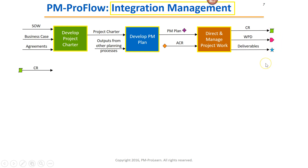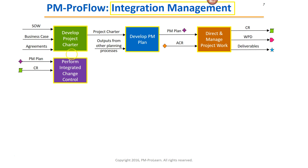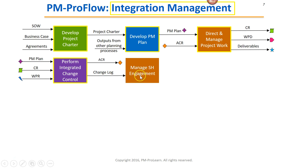Change Requests is an input to a process called Perform Integrated Change Control. It's purple because we're now in monitoring and controlling, and it's highlighted because it's still an integration management process. Perform Integrated Change Control needs the project management plan and Work Performance Reports as inputs. The output is Approved Change Requests, and the connector links it back as an input to Direct and Manage Project Work. The Change Log is also an output of Perform Integrated Change Control, and it becomes an input to the executing process Manage Stakeholder Engagement — which is not highlighted, as it's in the Stakeholder Management knowledge area.